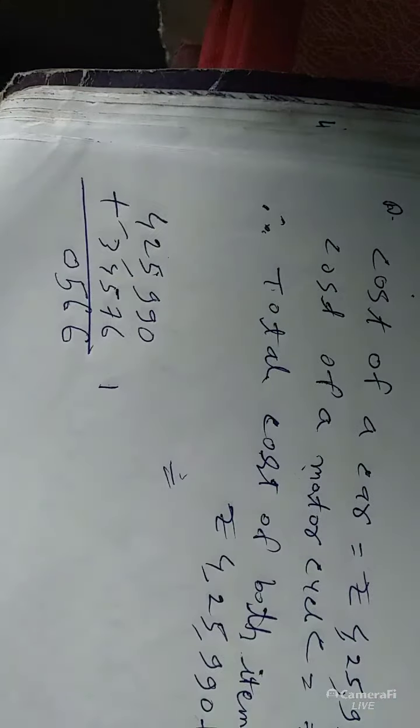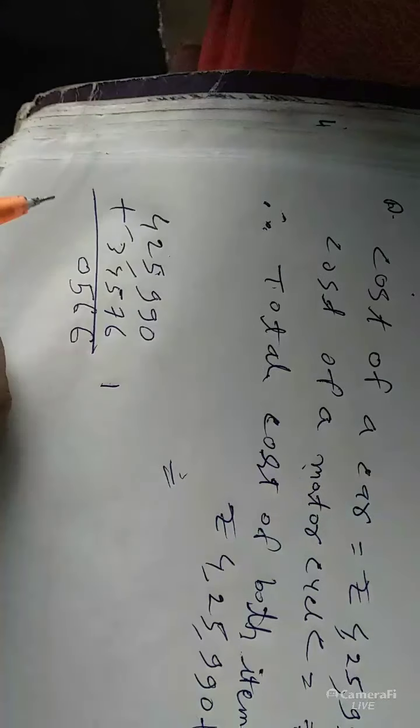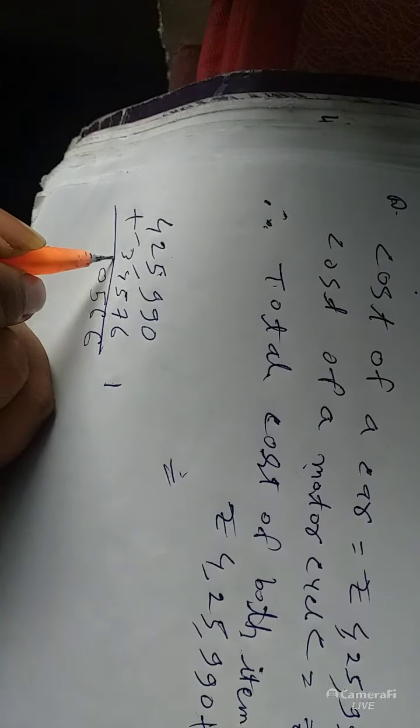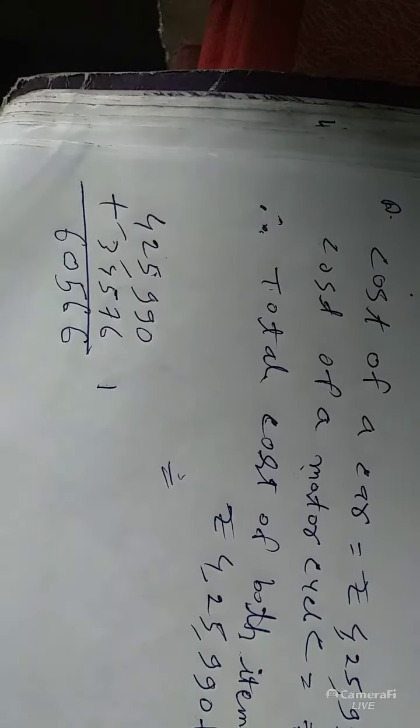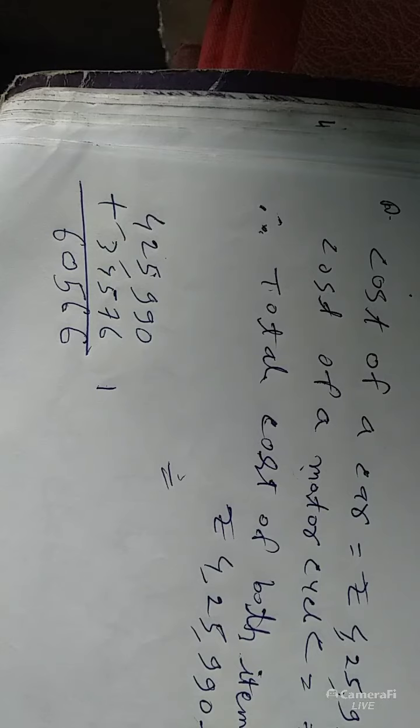3 plus 2 is equal to 5, plus 1 is equal to 6. So the total price of both is rupees 4,60,566.